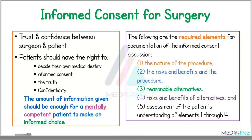The following are the requirements for documentation of the informed consent. Number one is the nature of the procedure. As a surgeon, you need to explain the nature of the procedure to the patient in the simplest possible way. Then you need to explain the risks and benefits of the procedure, the reasonable alternatives to the intervention, and also look at the risks and benefits of those alternatives. And lastly, you assess the patient's understanding through each of the elements.